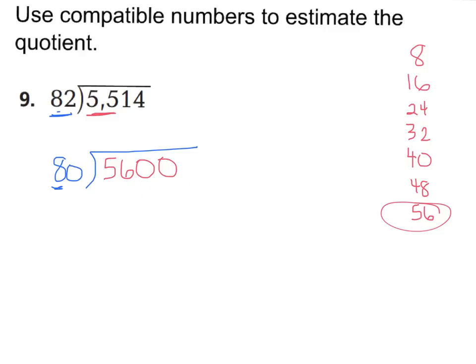So I'm estimating this dividend to be about 5,600 and my divisor to be about 80. Now I can easily divide. I can say 80 could go into 560 seven times because seven times 80 is 560. And then I'm just going to bring up my zero. So my estimate is about 70. The real answer should be near about 70. Now for this question, I did not ask for two different ones. So we just went ahead and found this one.